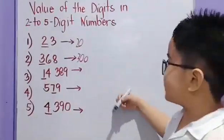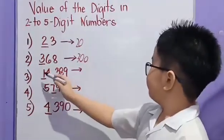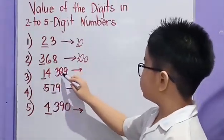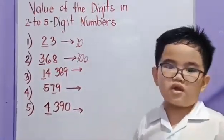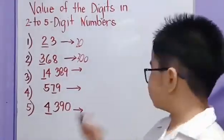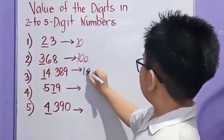Let us read 14,389. So, the value of 1 is 10,000.